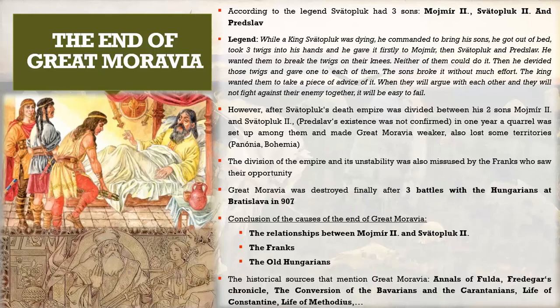The collapse of Great Moravia was not caused only by the quarrel between Svätopluk's two sons, but also by external threats from neighbors. The Eastern Franks saw opportunity in the kingdom's instability. Finally, Great Moravia was destroyed after three battles with the Hungarians — tribes coming from the East, from Asia, during the period of migration of nations, who wanted to settle in the territory.